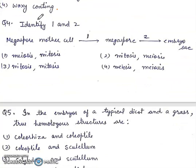Question 4. Identify 1 and 2. Megaspore mother cell by process 1 becomes megaspore, and by process 2 becomes embryo sac. We have to identify process 1 and process 2. 1 will be meiosis, 2 will be mitosis. Right answer is 1st.